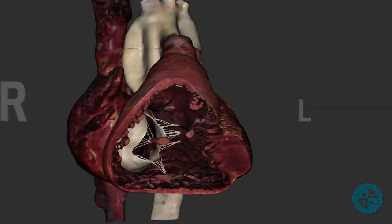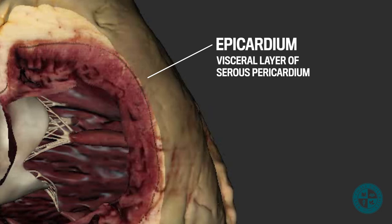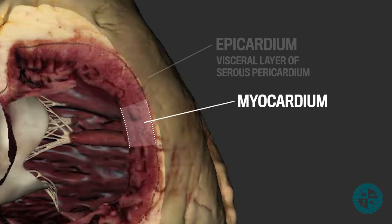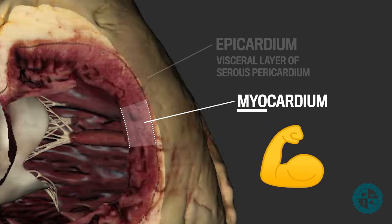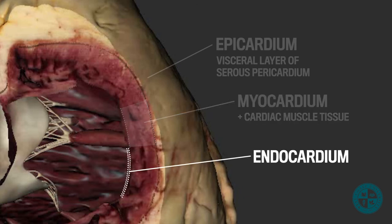We can also very clearly make out the layers of the heart. The superficial layer is referred to as the epicardium, also known as the visceral layer of the serous pericardium. The next deepest layer is very thick in comparison and is called the myocardium. When you hear 'myo' in anatomy, always think muscle — so the myocardium is the muscle layer of the heart. It consists of cardiac muscle tissue and cells that contract to generate enough force to pump blood throughout the body. The deepest layer is the endocardium, a thin layer that lines all the chambers of the heart and the heart valves.